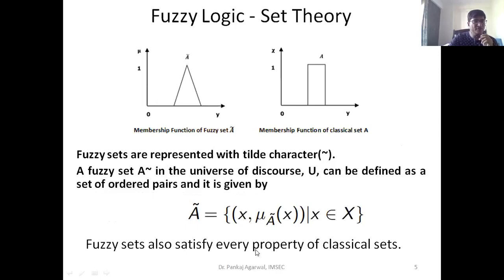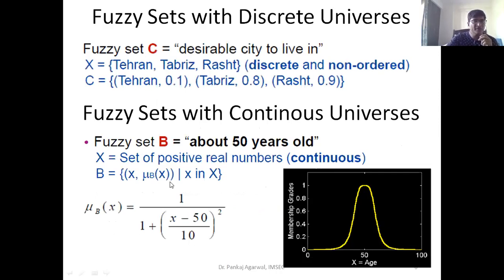The fuzzy set satisfies all the classical properties you have read in set theory. Fuzzy sets can be associated with discrete cases as well — for example, if X represents three cities or countries, a value of 0.1 associated with Tehran is a discrete value, 0.9 is a discrete value.